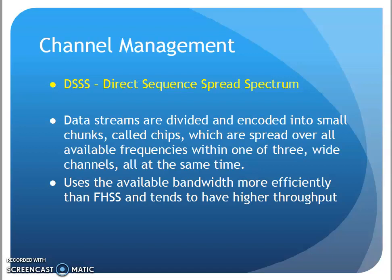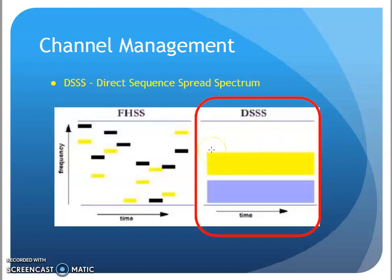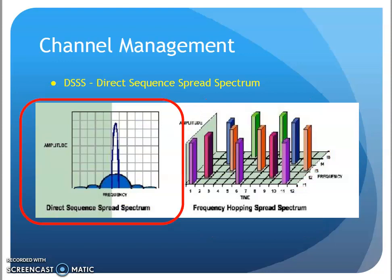The other technology is direct sequence spread spectrum. Here, the data stream is divided across the whole frequency band and sent as large chunks. Instead of just pieces hopping around, it spreads the data across the entire frequency band. The idea is to be more efficient with sending data, allowing larger overall throughput through that frequency band, even if some portions have interference.